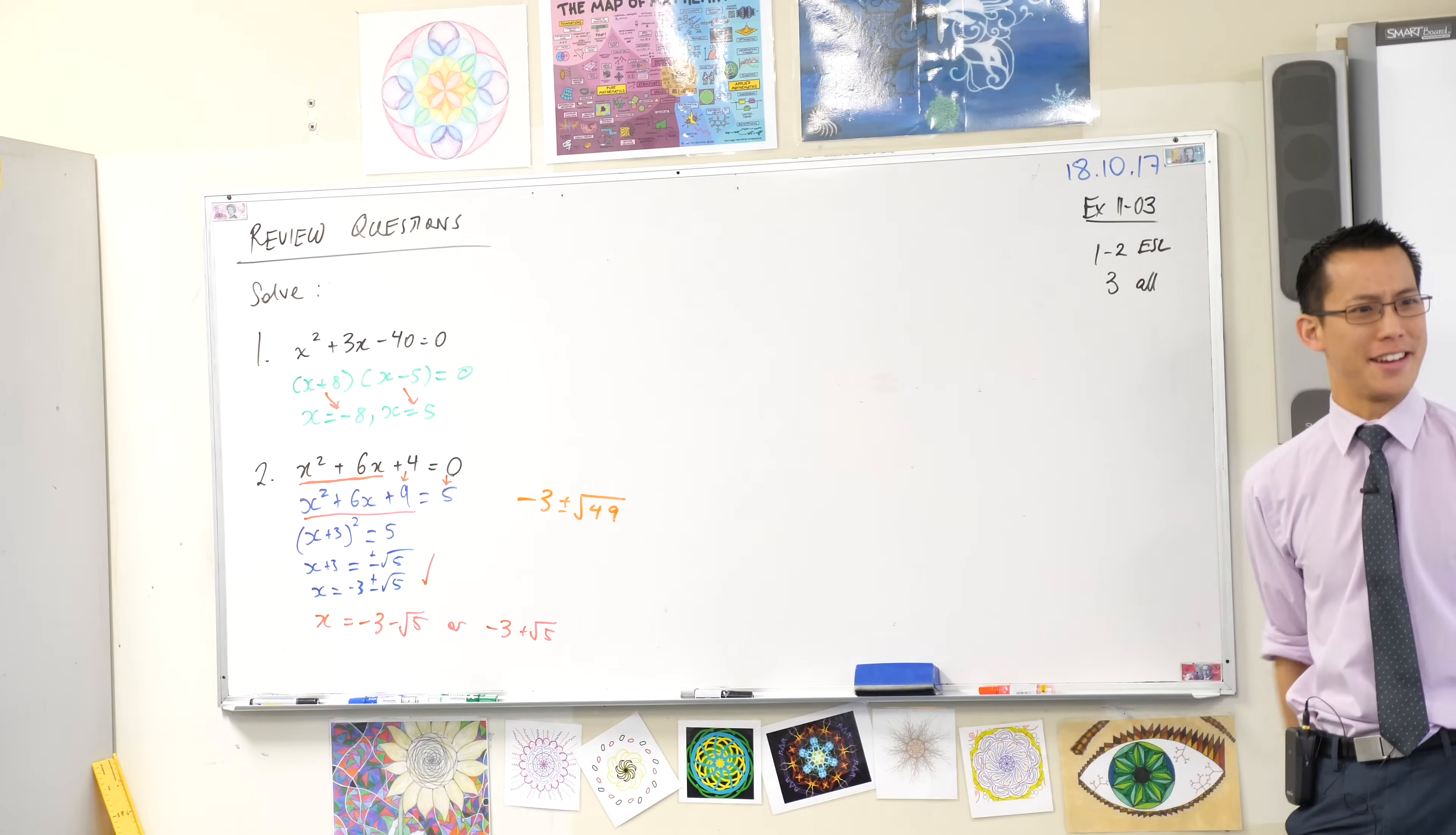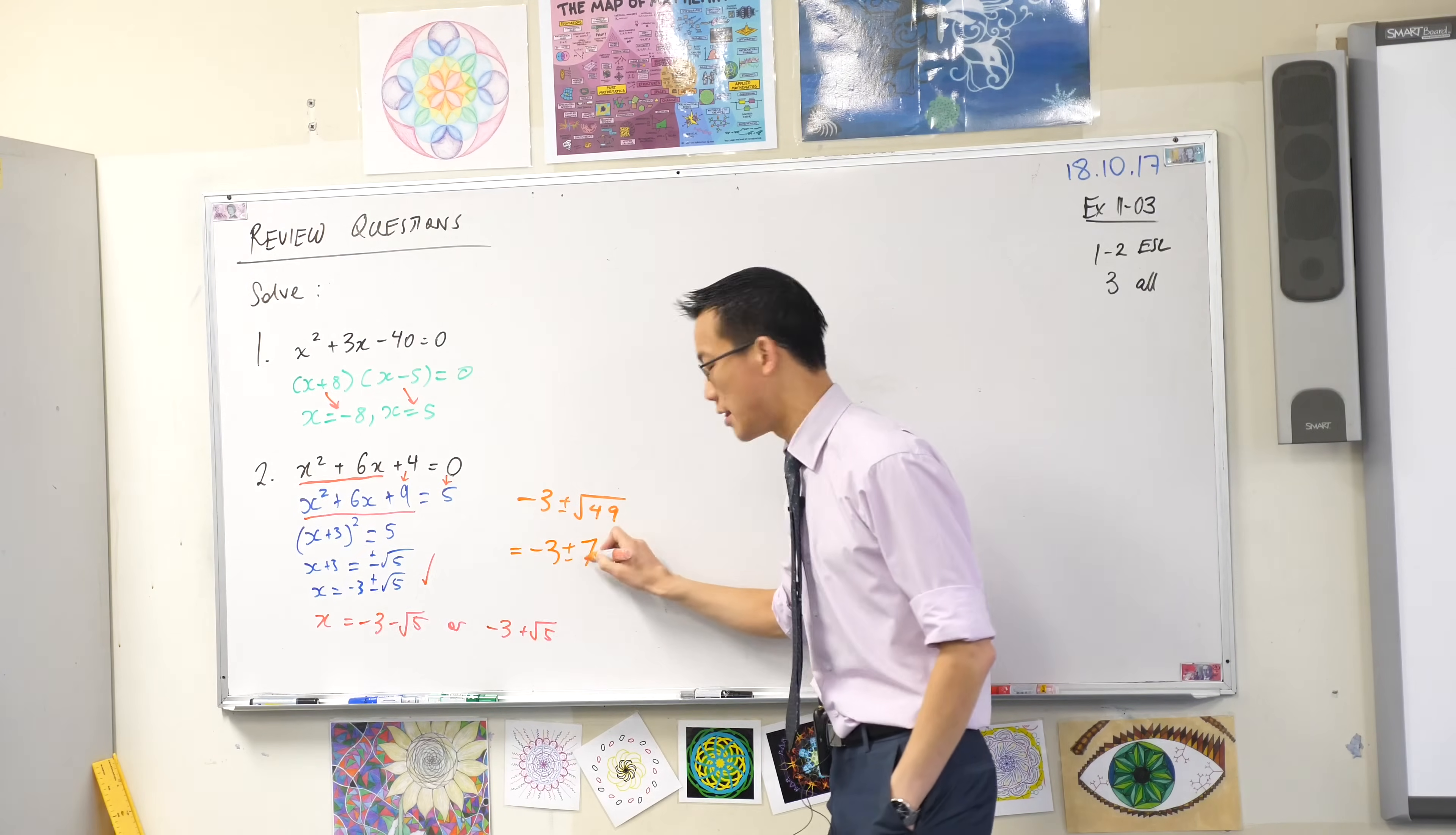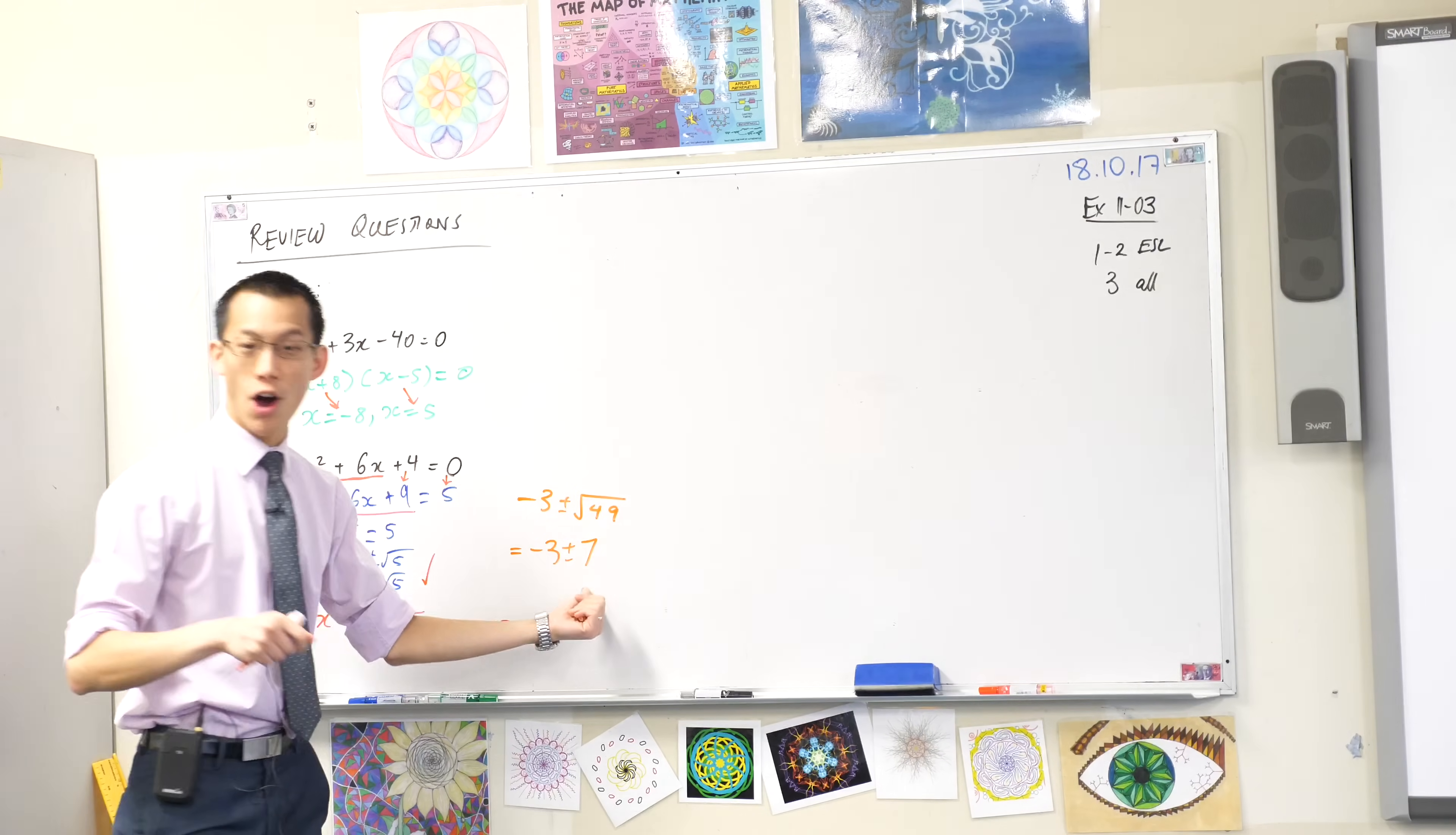Now we know what 49 is. It's a special number. It's 7 squared. So I actually can take the square root of 49. It gives me this. Now this is still true. This is still two solutions. But because it's not a surd anymore, because it's just whole numbers, right?